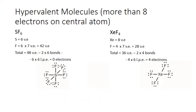Let's count remaining electrons. For sulfur hexafluoride, starting with 48, subtracting six bonds and six lone pair electrons per fluorine atom leaves zero electrons — all placed. For xenon tetrafluoride, starting with 36, subtracting four bonds and lone pairs on four fluorine atoms, leaves four electrons remaining.